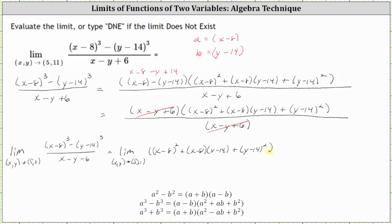In performing direct substitution, we have the quantity (5 - 8) squared plus the quantity (5 - 8) times the quantity (11 - 14) plus the quantity (11 - 14) squared.